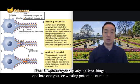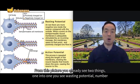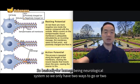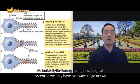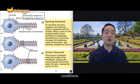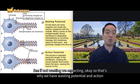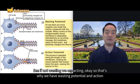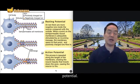From this picture, you can already see two things. One: resting potential. Two: action potential. So basically for the human neurological system, we only have two conditions — if not resting, we are acting. That's why we have resting potential and action potential.